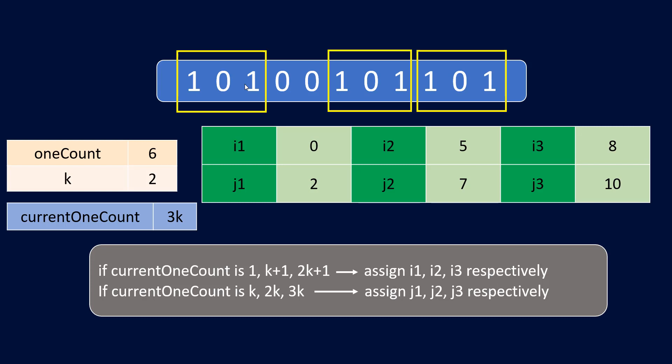Now we compare the numbers in the three partitions. If the numbers are not equal, there is no chance of bifurcating into three parts and we can simply return -1, -1. In this case the numbers are the same, so we continue.